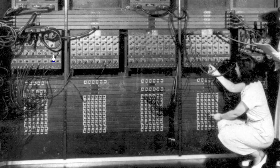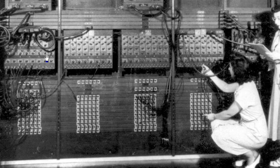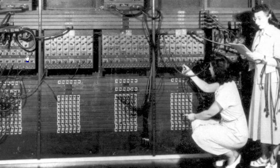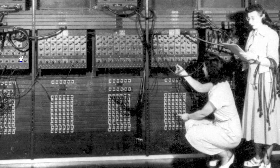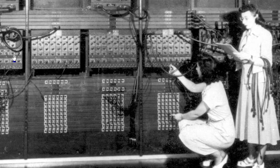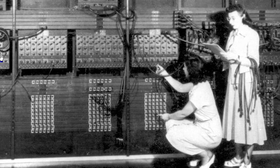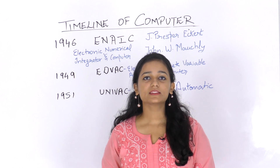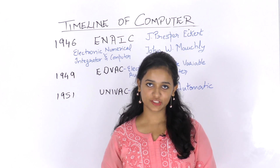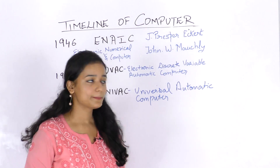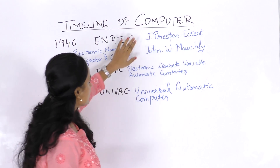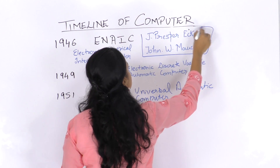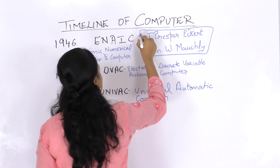In 1946, ENIAC — which stands for Electronic Numerical Integrator and Computer — was the first general purpose digital computer. It was developed by J. Presper Eckert and John W. Mauchly.